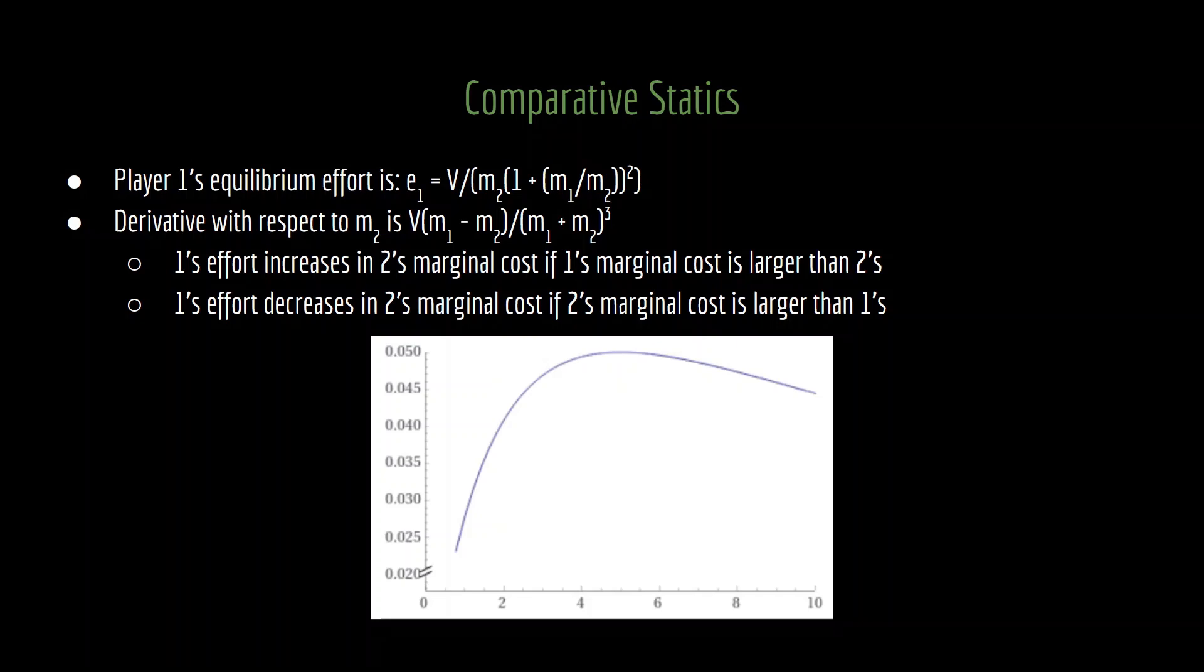In contrast, if your opponent already has very high marginal costs, they're not going to exert much effort into the contest. And if you further increase their marginal cost, that effort is going to further decline. In turn, you can pump the brakes a little bit, because you know that your opponent isn't going to be fighting you very much, and you can maintain a very high degree of winning without paying as much. So you slack off a little bit, knowing that your opponent's marginal cost increasing is going to cause them to slack off as well.